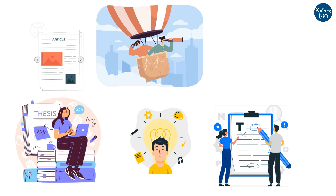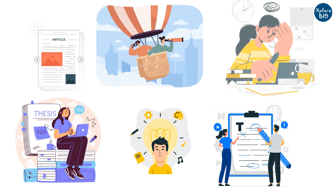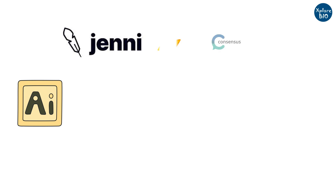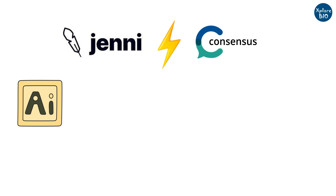And if you are a student or an early career researcher, I know how overwhelming this can feel — I have been there. Therefore, in this video, I will compare two popular and extremely powerful AI tools, Jenny and Consensus, to overcome the most common challenges students and researchers face in academic writing and literature search.